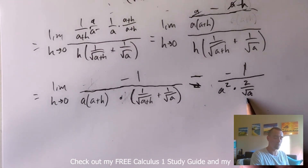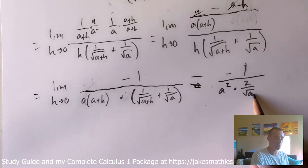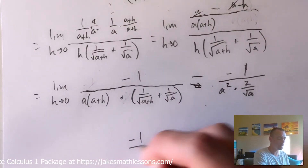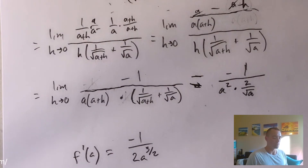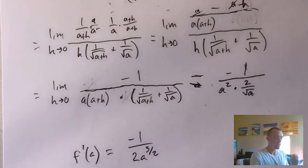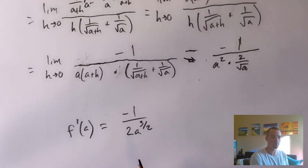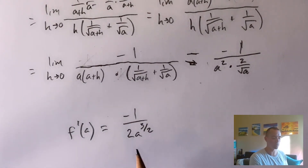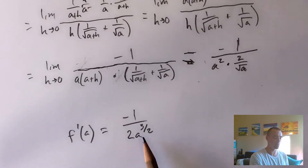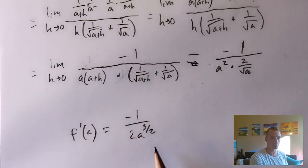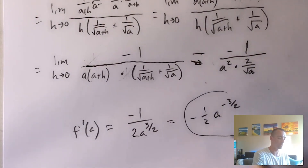Now we can simplify. Thinking of the square root of a as a to the one half, we have a squared times two over a to the one half. The one half power cancels with part of the two, giving us negative one over two a to the three halves. This equals f prime of a, which represents the slope of our tangent to this curve at the point where x equals a. If you were to take the derivative using the power rule and plug in a for x, you would get negative one over two a to the three halves — or equivalently, negative one half times a to the negative three halves — confirming our answer.